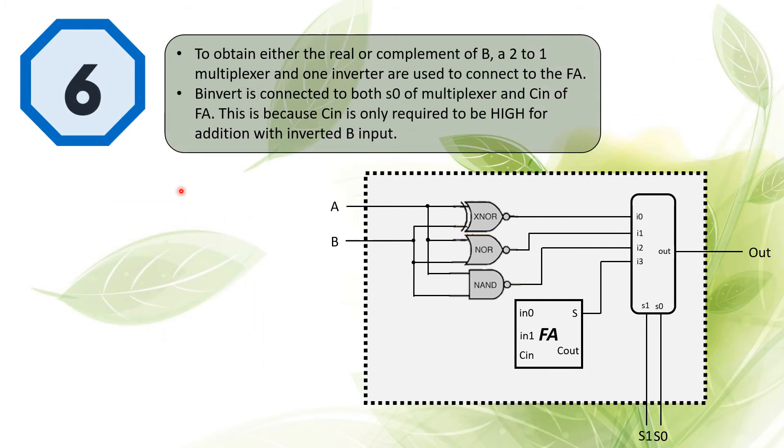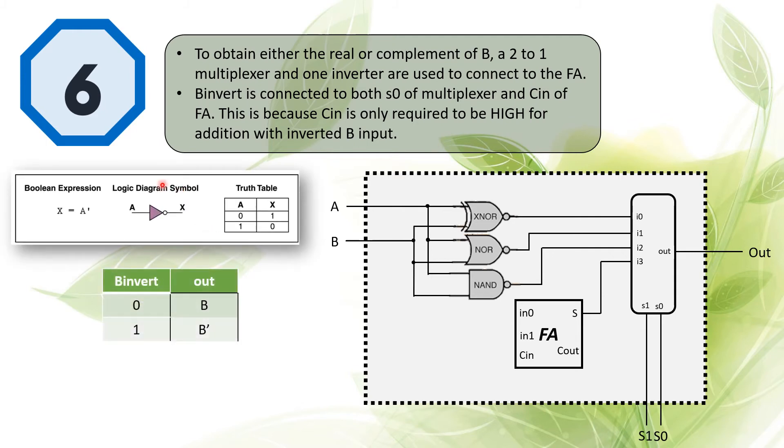To obtain either the real or complement of B to operate the addition, we need to have a two-to-one multiplexer to choose whether to invert the input B signals and use the inverter here.